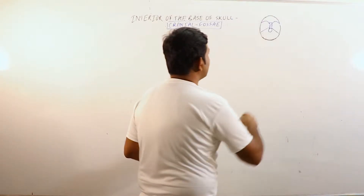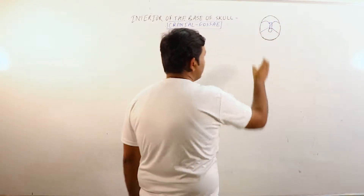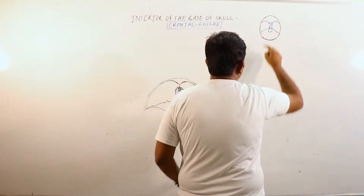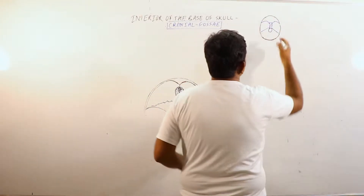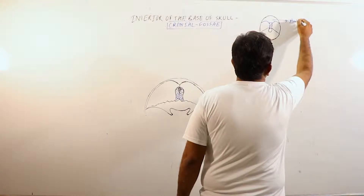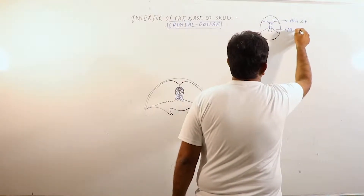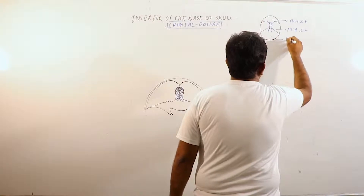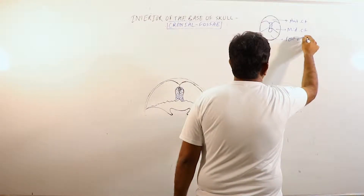When we observe the interior of the base of skull we will see three fossae. This is the anterior cranial fossa, this one is the middle cranial fossa, and this one is the posterior cranial fossa.